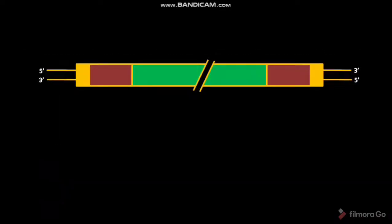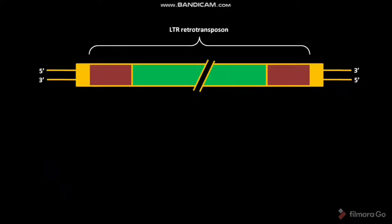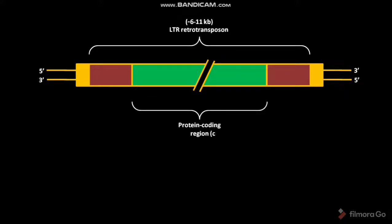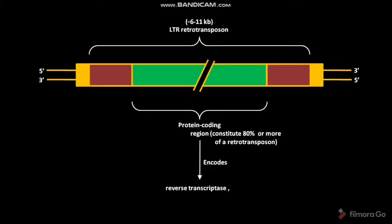In eukaryotes, the LTR retrotransposon, or long terminal repeat retrotransposon, has a length of about 6 to 11 kilobases. The central protein coding region constitutes 80% or more of a retrotransposon. The protein coding region encodes reverse transcriptase, integrase, and other retroviral proteins.